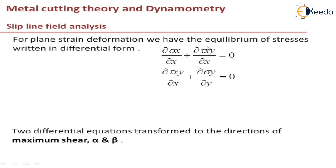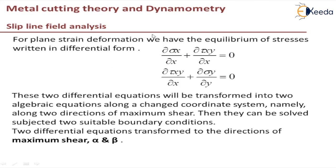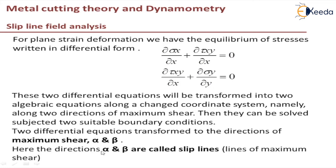For plane strain deformation, differential equations for mean stress and deviatoric stress are obtained. These differential equations are then converted into algebraic equations along a changed coordinate system — specifically along the two directions of maximum shear, called alpha and beta. These can then be solved subject to boundary conditions, giving us the stresses on the slip lines.